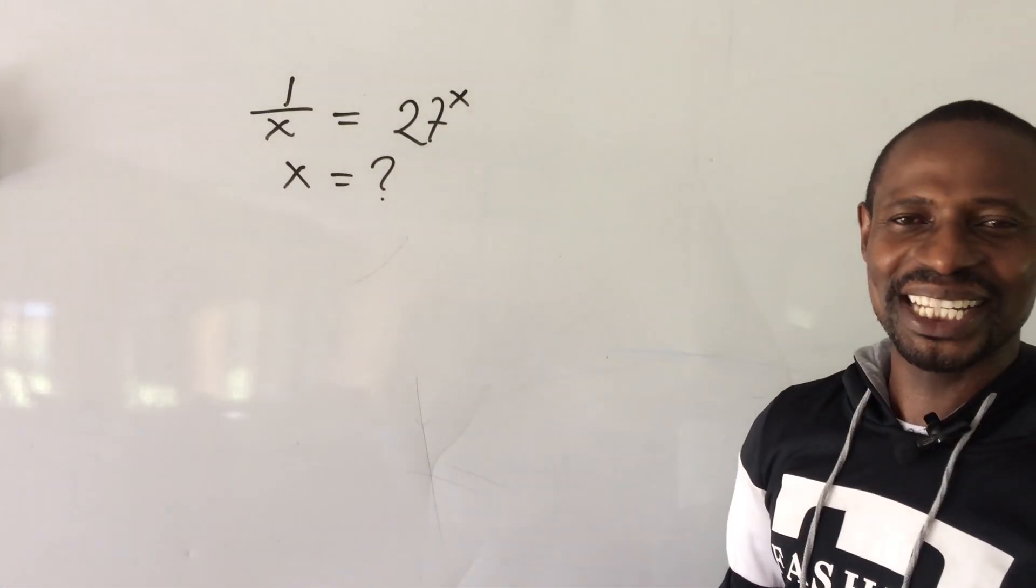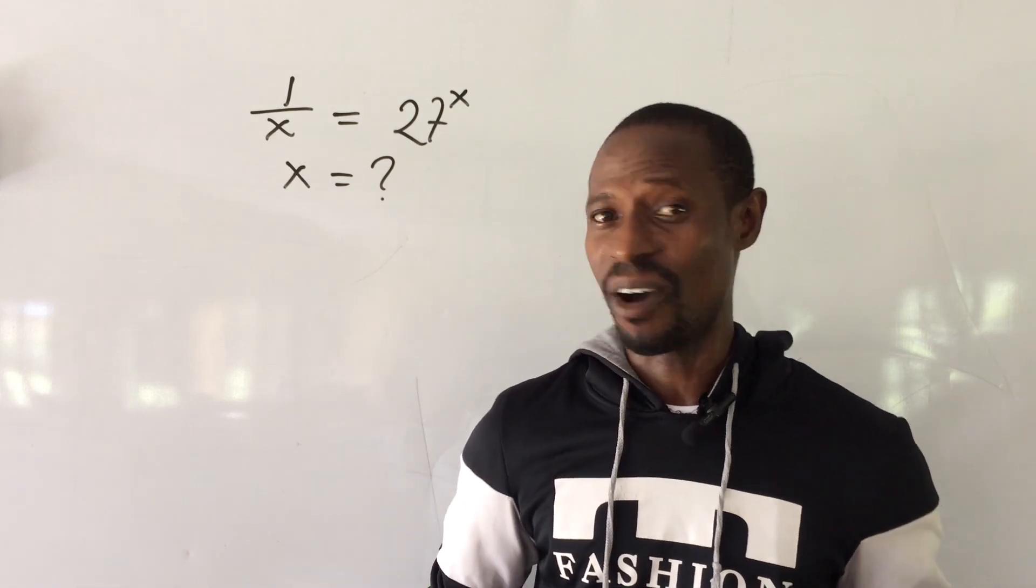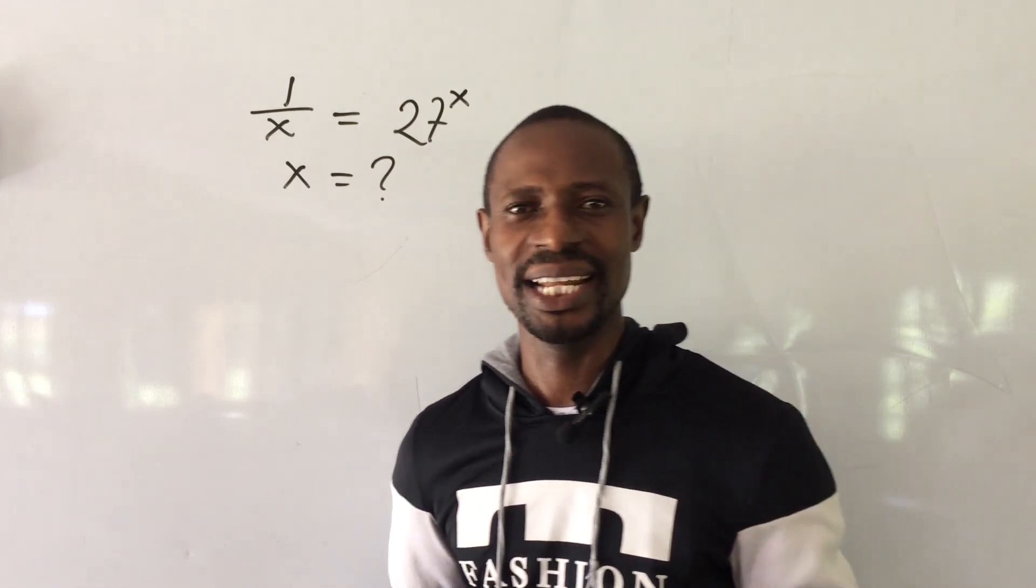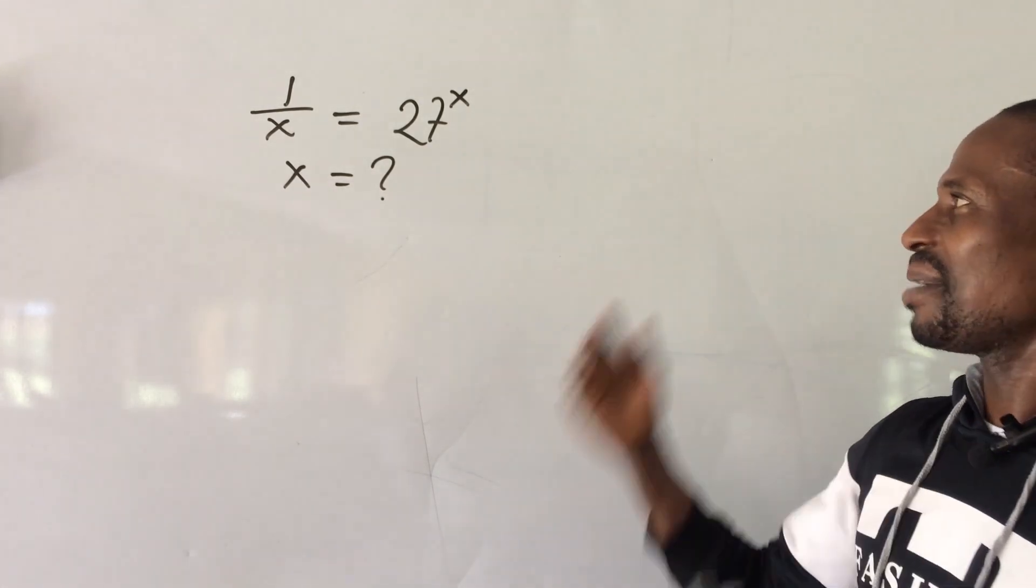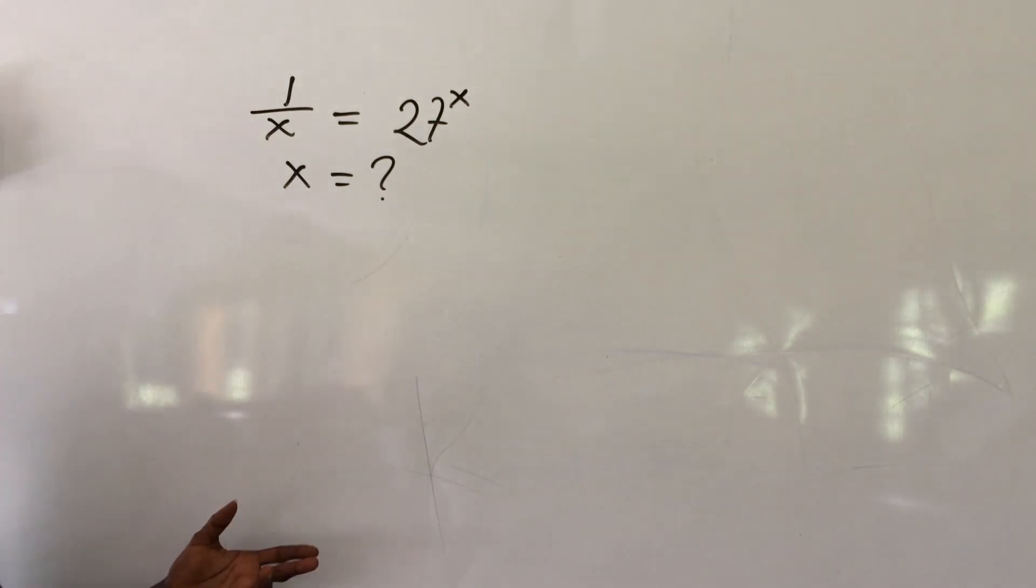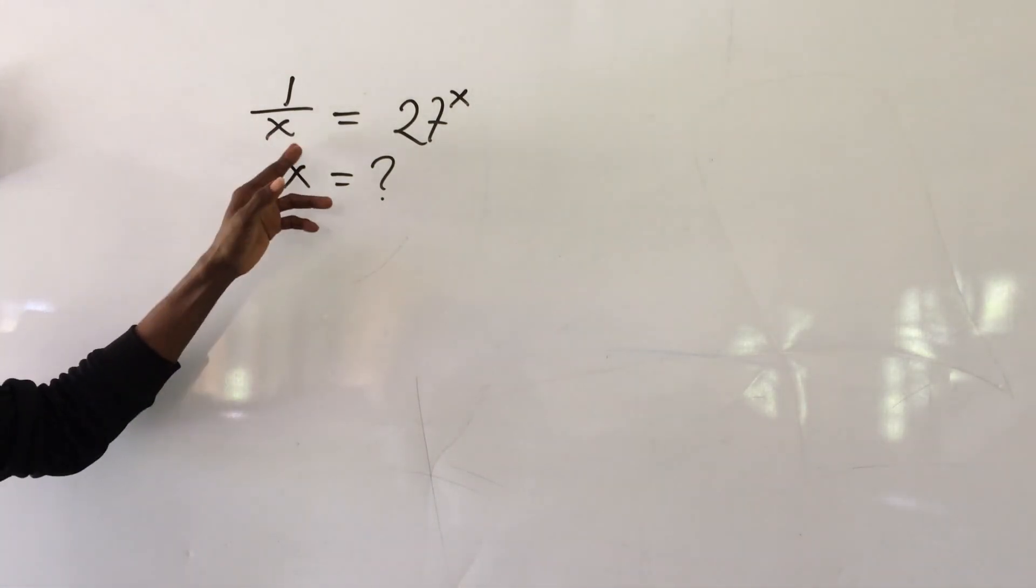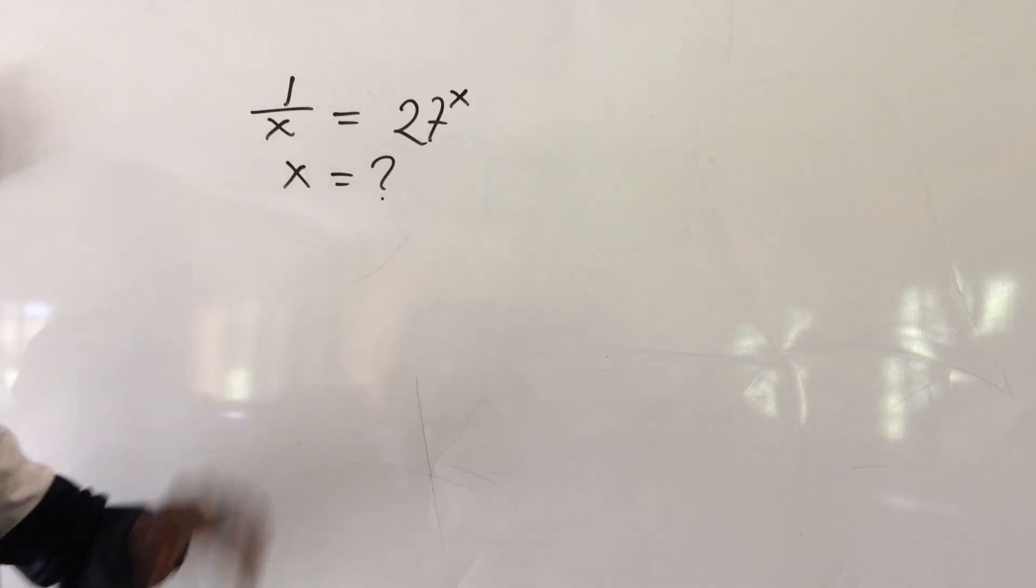All right, welcome to online man's tv, my name is Jakes and here we drop new videos all the time ranging from Olympiad and some other international math challenges. Before us today we have an exponential equation. The question reads: 1 over x equal to 27 to the power of x.